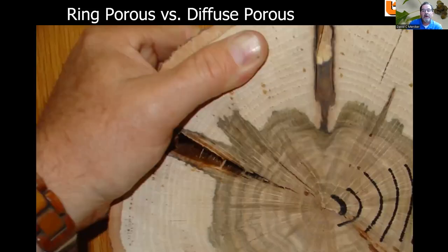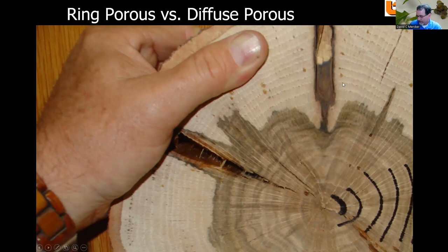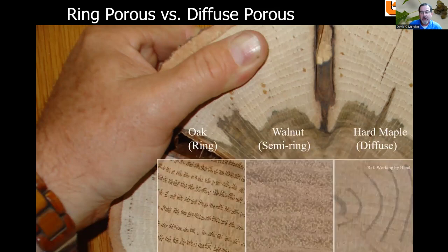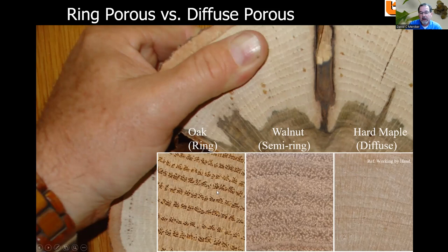Ring porous versus diffuse porous trees: in ring porous trees, you can actually see the growth rings very distinctly — you can see the pores there, as in the oak example. Diffuse porous trees produce rings too, but they're much more challenging to see. Some trees are semi-ring porous. Once wood has been finished into cabinets or furniture, some consumers prefer the ring porous look with more grain pattern, while others prefer wood without much grain.